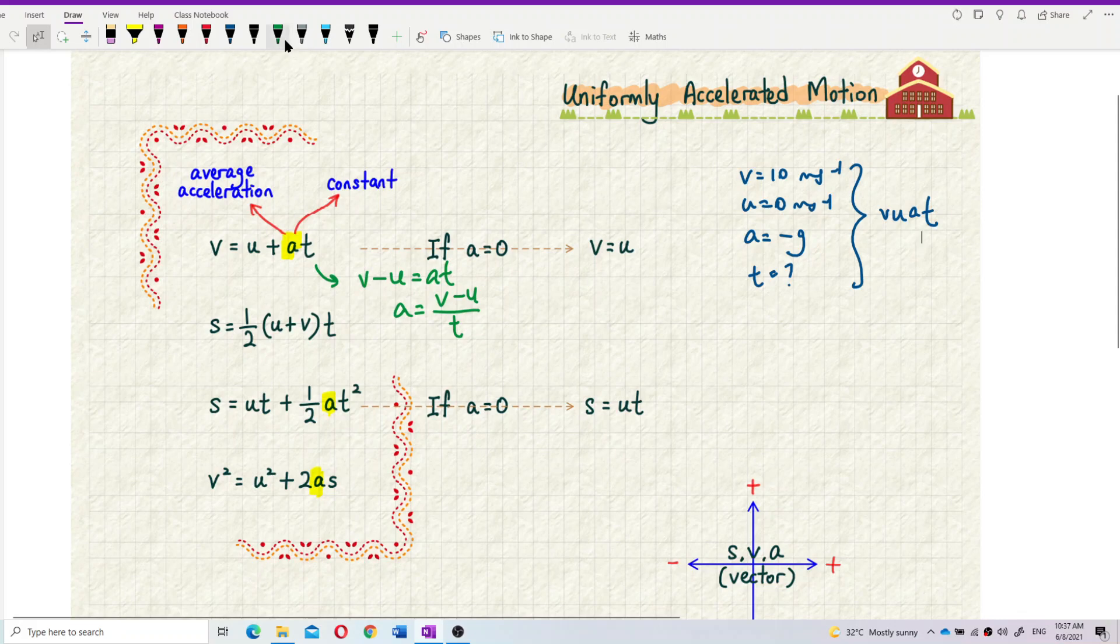To simplify, we have acronyms for each of these. This is called, the first one is called buat. The second one is svat. And then the third one is sutat. And then this is vuas. The first one is buat, and this one is vuas.